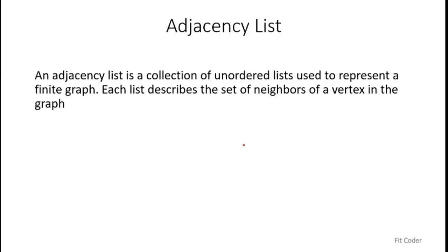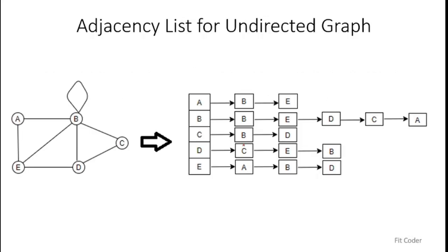The definition of an adjacency list is: it is a collection of lists used to represent a finite graph. The size of the list is equal to the number of vertices, and each list describes the adjacent neighbors of that vertex in the graph.